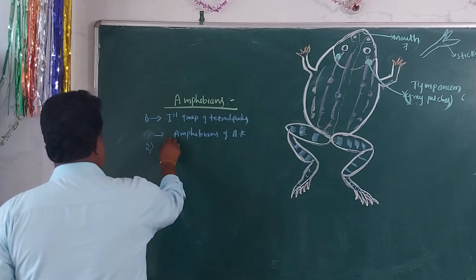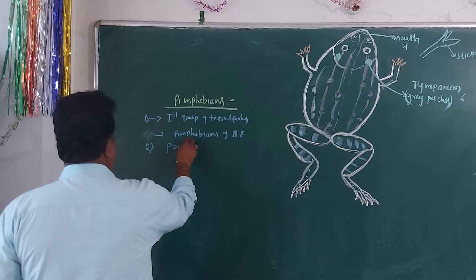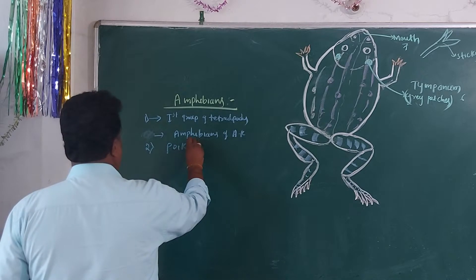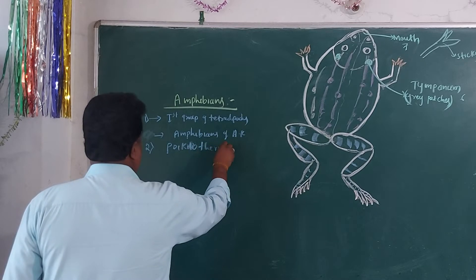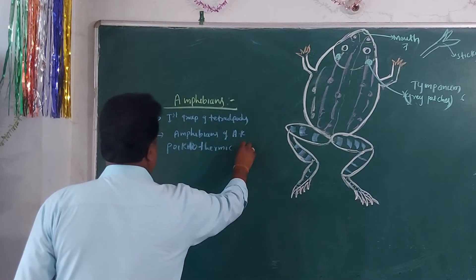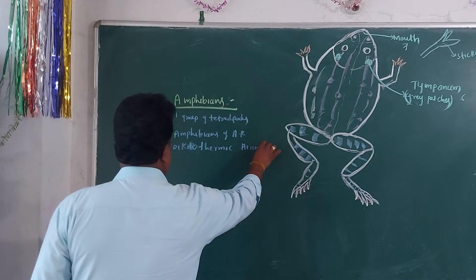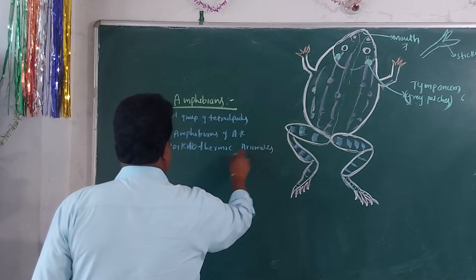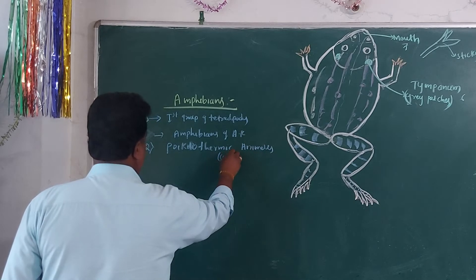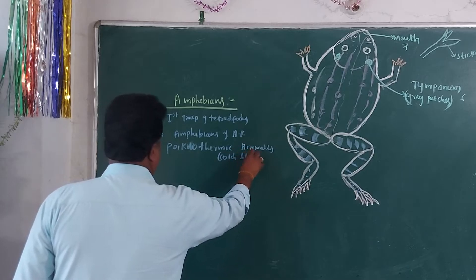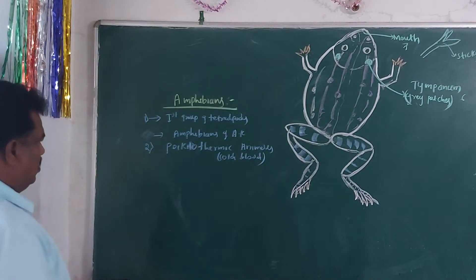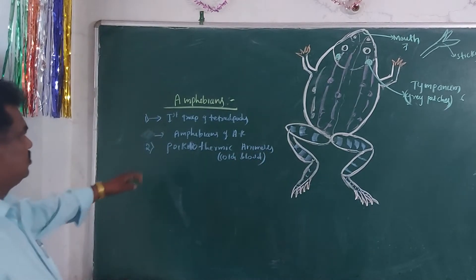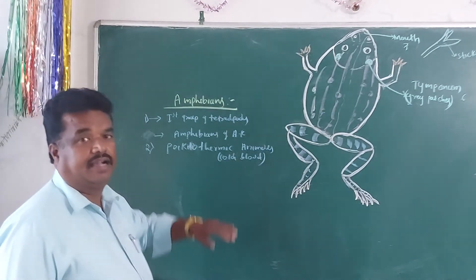These are usually poikilothermic animals — means these are cold-blooded animals. So amphibians are poikilothermic, that is cold-blooded animals.